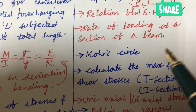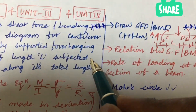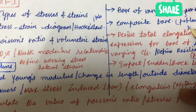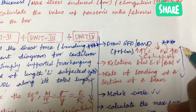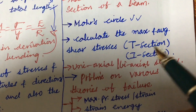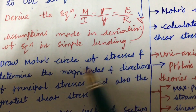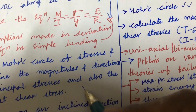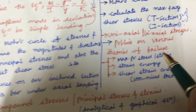Derive the bending moment equation and assumptions made in the derivation. Related to Mohr's circle, you will be asked a problem and to calculate the maximum and average shear stress. These topics cover exam questions 1a, 1b, 2a, 2b, 3a, 3b, and 4a, 4b. For question 5: calculate the maximum and average shear stress in an I-section or T-section — this is a gunshot question. Draw Mohr's circle for a given stress state and determine the magnitudes and directions of principal stresses and the greatest shear stress.